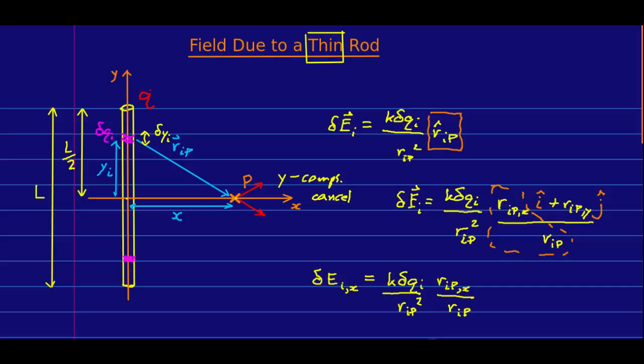We know that the charge q is distributed over this rod. And so, the charge density, the linear charge density, is q over l.